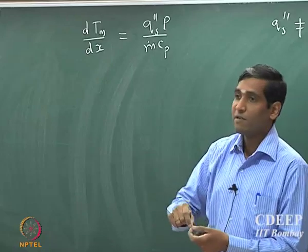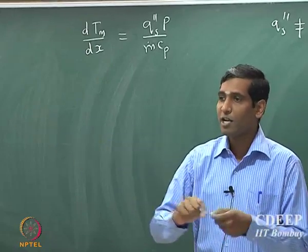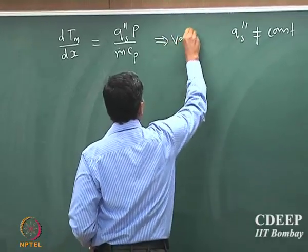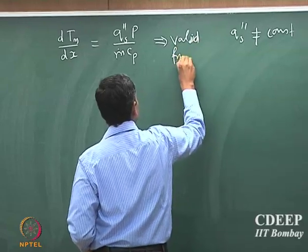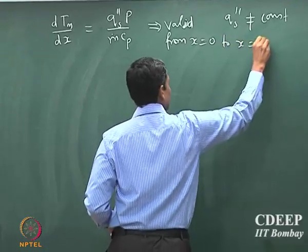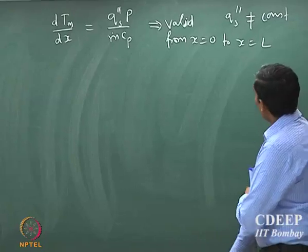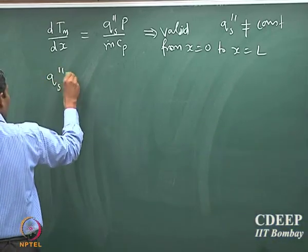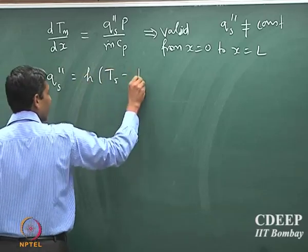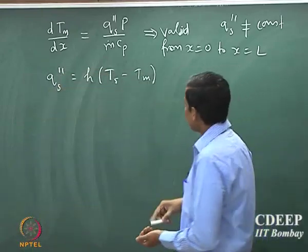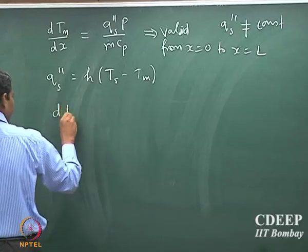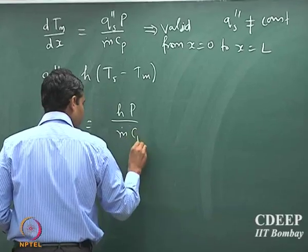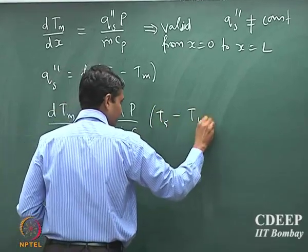This equation is an equation for every location in the pipe — this is the general balance written from x equal to 0 to x equal to L. The flux is not constant; however, from Newton's law of cooling, we know that flux equals h into (Ts minus Tm). Now we can use this expression, substituting H·T/(ṁCp)·(Ts minus Tm).